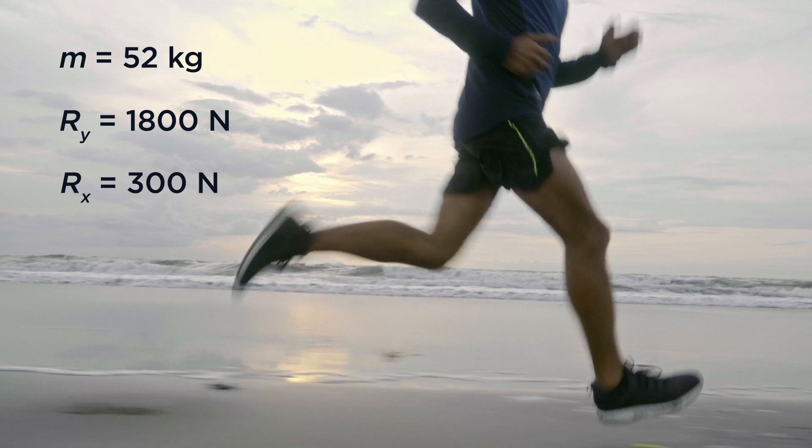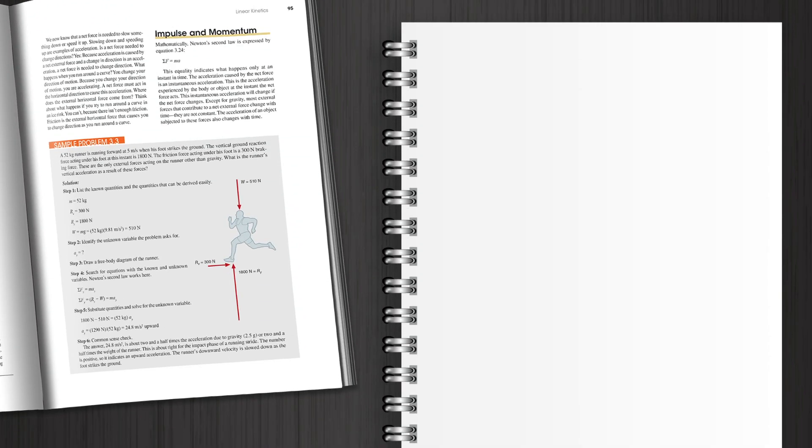What is the runner's vertical acceleration as a result of these forces? First, let's list the known quantities and the quantities that can be derived easily. The mass of the runner is 52 kilograms. The vertical ground reaction force is 1,800 newtons. The friction force is 300 newtons.